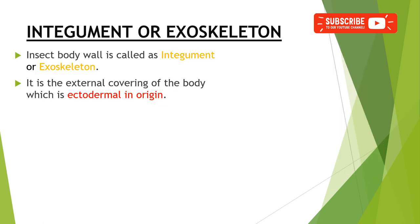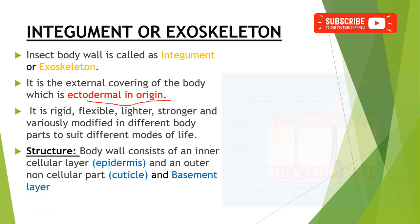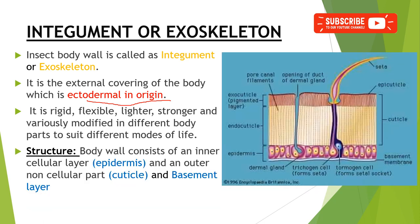What is integument or exoskeleton? The insect body wall or external covering of the insect body is called the integument or exoskeleton. This exoskeleton is mainly ectodermal in origin. Its characteristics vary according to the insect and its environment; this integument may be rigid, flexible, lighter, or stronger in nature.